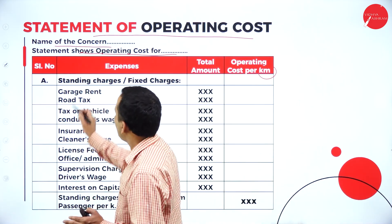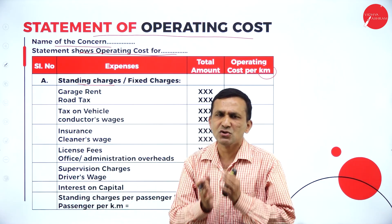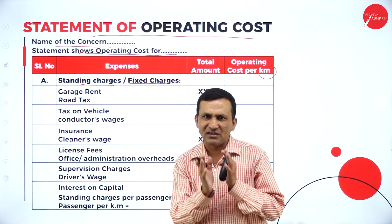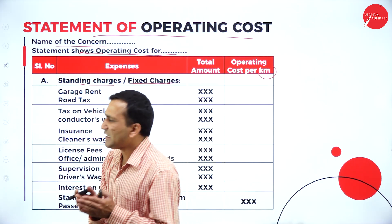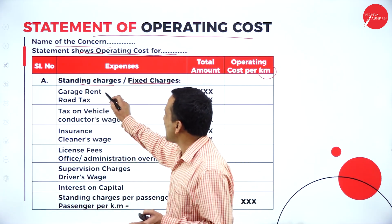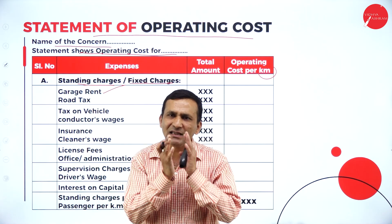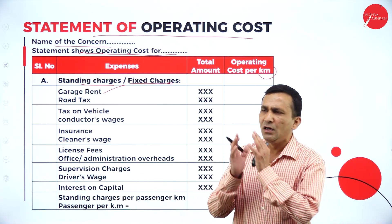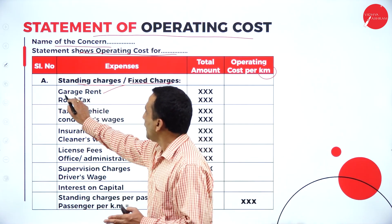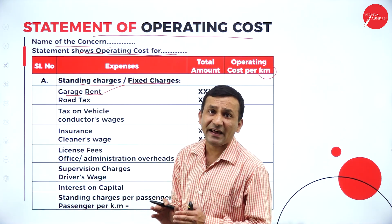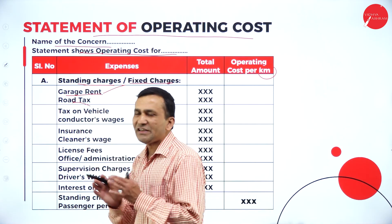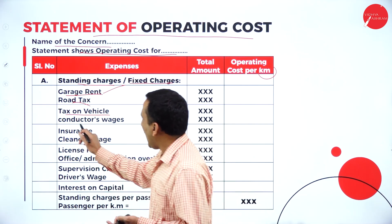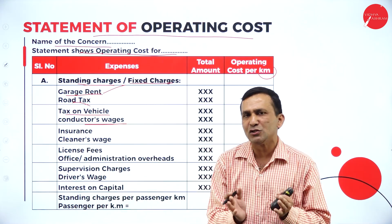The statement of operating cost shows the name of the concern, like the transportation company, and the year ended — for example, the year 2023 is very important to specify. There are two major expense categories: first one is standing charges. Under standing charges, which are fixed charges that never change, the first item is garage rent — where the transportation vehicle keeps all accessories for transport or parking. Road tax which cannot be changed, tax on vehicle which is also fixed, and conductor wages or salary which is also fixed.